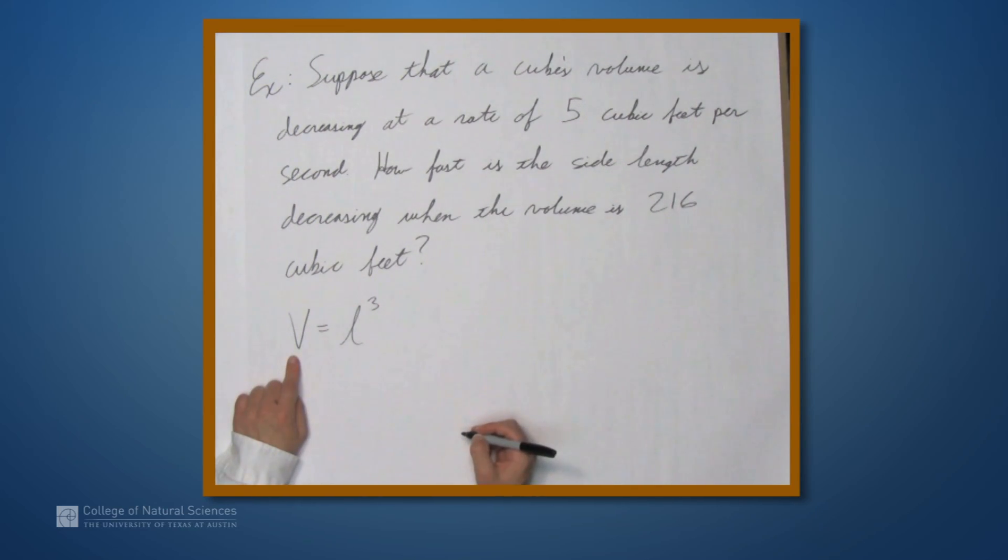And again, we want to find the derivative of V with respect to t. The cube's volume is decreasing. That's talking about the quantity dV/dt.